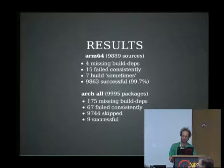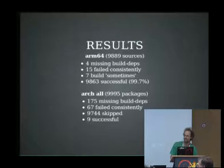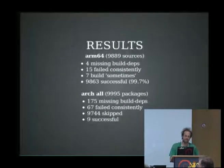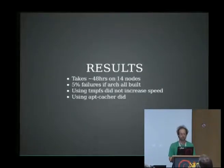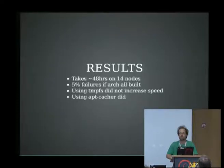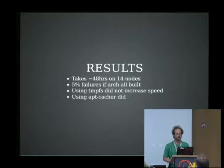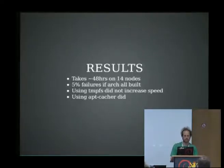They don't follow build-deps, maintainers don't test them properly. So this is a useful QA exercise in that you will find out some of this stuff that we ought to just fix. We have, in fact, filed a fair number of bugs from things we discovered. The bottom line is it only takes 48 hours with 14 nodes to build all of Debian on ARM64 — and everyone knows ARMs are incredibly slow. I was expecting it to take about a week at least. Even with the arch-all stuff, there's only about 5% of things that are broken.